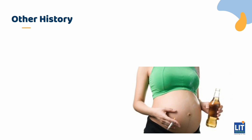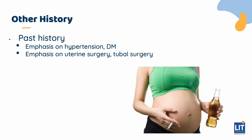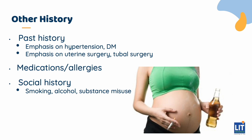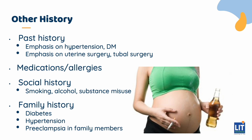After eliciting a detailed history about the presenting complaint, the present pregnancy, and the past obstetric history, we need to move on to the other history, like her past medical and surgical history, with particular emphasis on hypertension and diabetes, and any previous gynecological-related surgeries such as uterine or tubal surgeries. Also ask for any medications she's currently on, drug allergies, social history of smoking, alcohol or substance misuse, and family history. In particular, ask for diabetes, hypertension, or pre-eclampsia in family members.